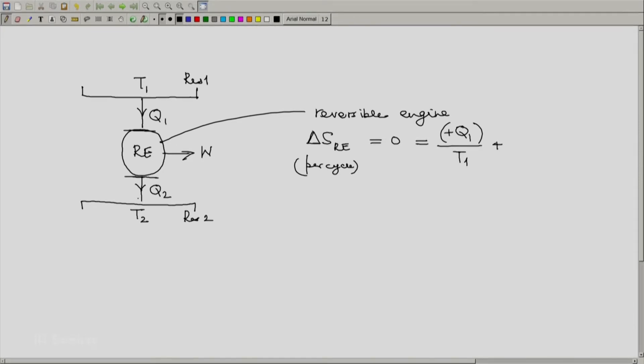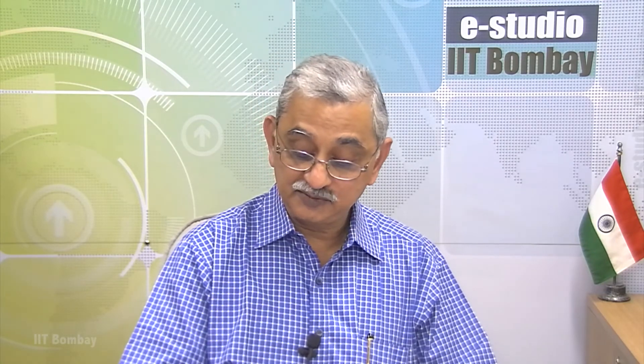So here the heat absorbed by our reversible engine is minus q2 divided by the temperature T2. And we know from our analysis and definition of the thermodynamic temperature scale that the expression here on the right hand side is indeed 0.